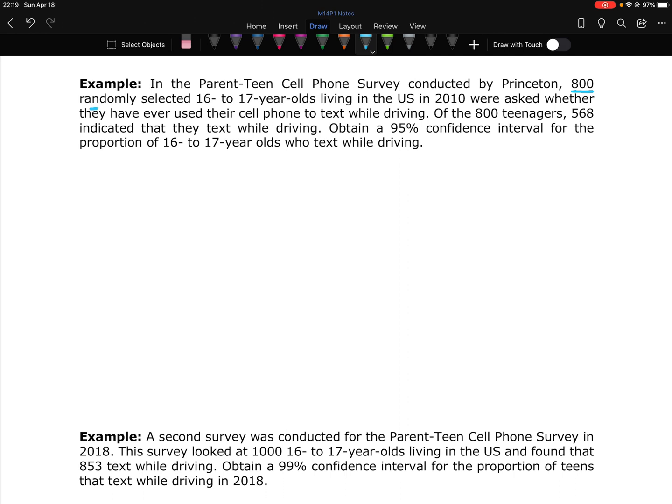We are looking at 800 randomly selected 16 to 17 year olds. 568 of them said that they text and drive. We want to do a 95% confidence interval. And we've been told this is a proportion. That's helpful for us when we're trying to figure out, am I looking at a proportion or am I looking at a mean? This told us proportion, that's always helpful. Another indication is they were asked whether they have ever used their phone to text while driving. Do you text while driving? That's a yes or no question. That means this is going to be a proportion. If the question had been, how many times this week did you text while driving? That would not be a proportion. Because the phrasing of this question was a yes, no question, that's another indication that this was proportions.